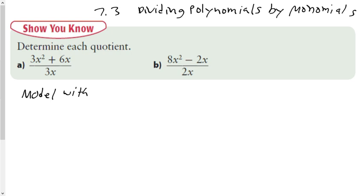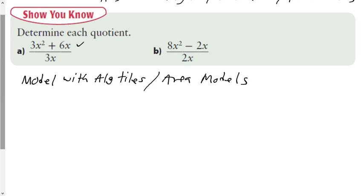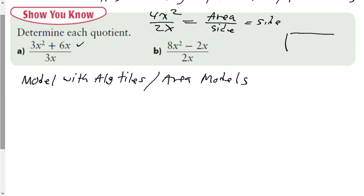The first way we're going to model these expressions is with algebra tiles and/or area models — you could do both. The algebra tile model is the way we're going to default to for our modeling, but we'll look at both. The first question gives us the binomial 3x² + 6x divided by 3x. Think back to 7.1 — if we had 4x² divided by 2x, we wanted to think of the top number as the area divided by the side you know, to find the side you don't know. Just like a non-algebraic example: area of 10 divided by side of 5 gives the missing side of 2.